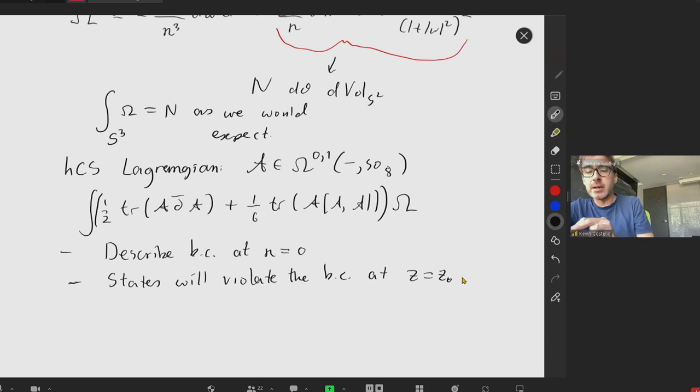The natural boundary condition, if you spend a little time thinking about it, it's a little subtle. But we noticed that omega has a pole, order 3. It turns out that asking that A has a zero is a good boundary condition. So if we ask that A goes like n, near n equals 0, is a good boundary condition.